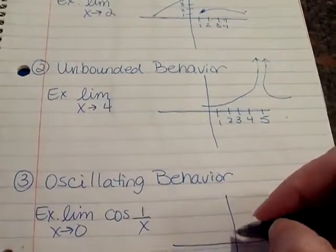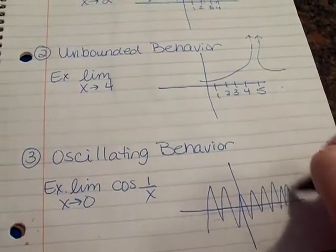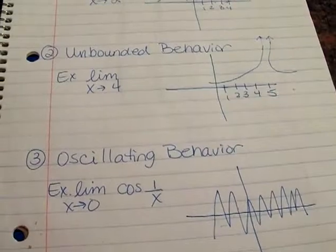And the last case is oscillating behavior. A graph like this would be where the values are just bouncing back and forth. So it looks something like this. The limit would also not exist in that case.